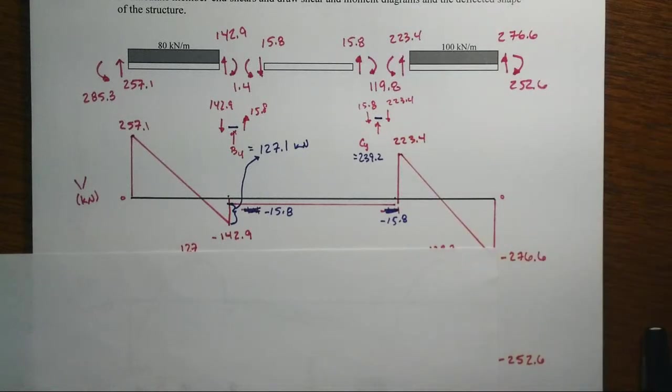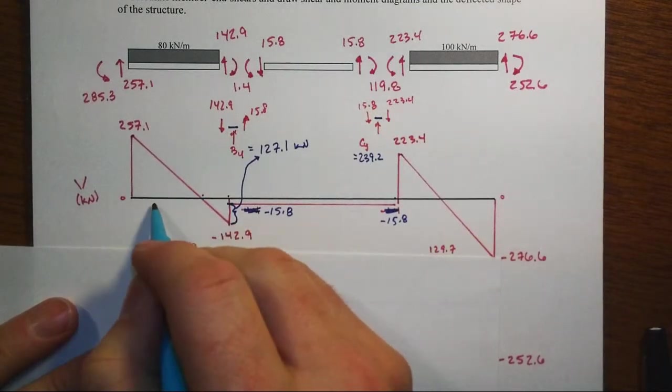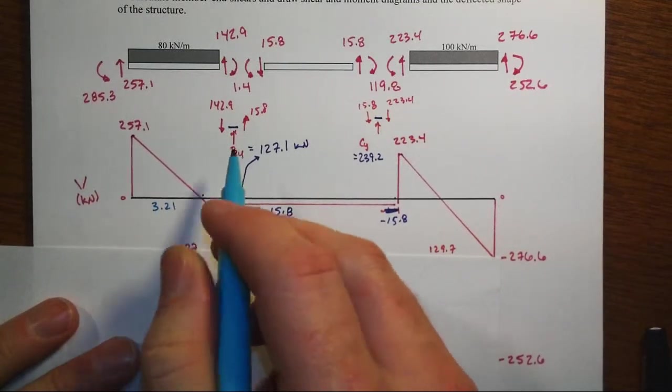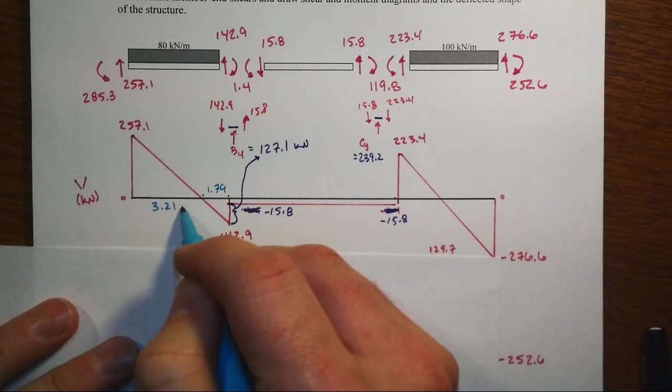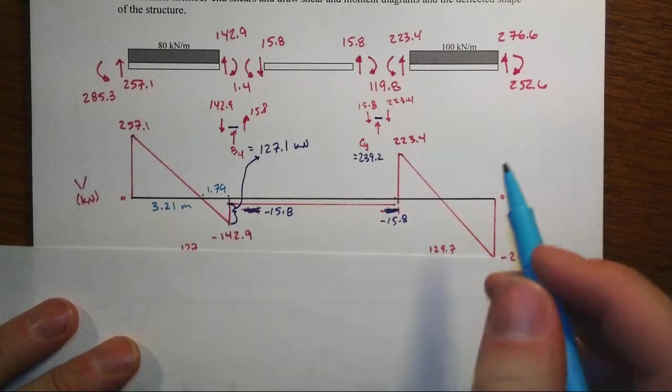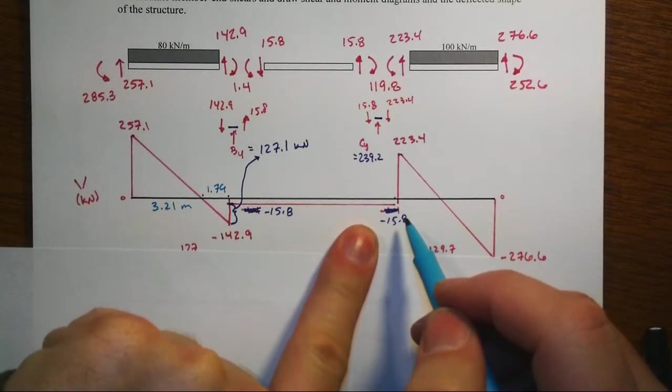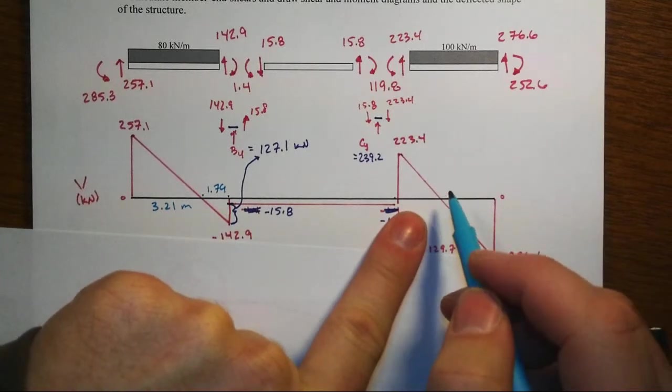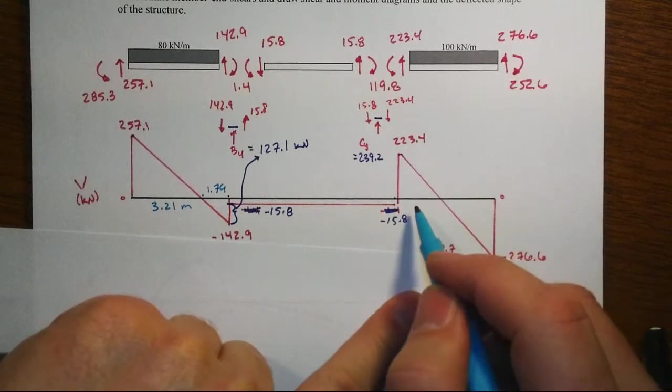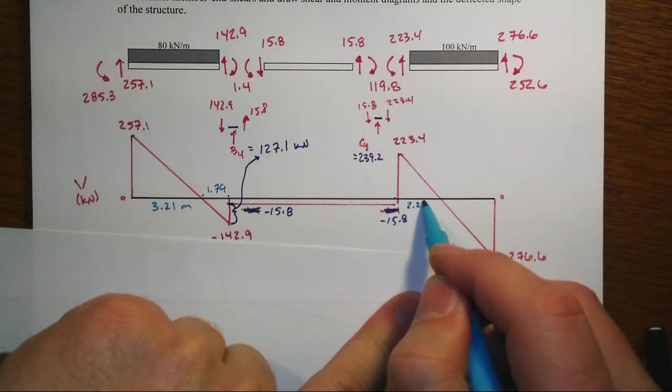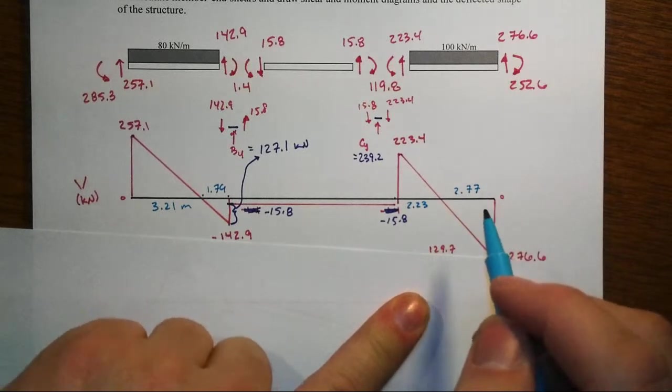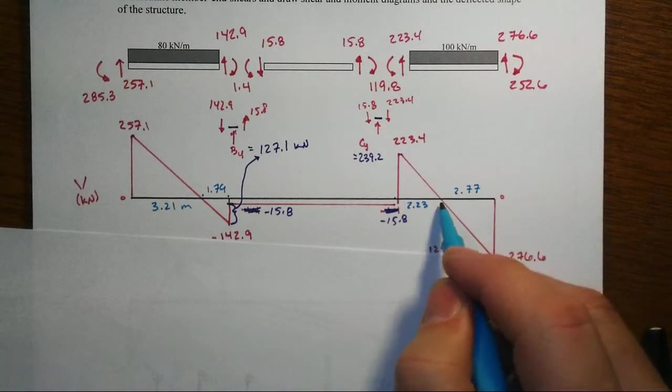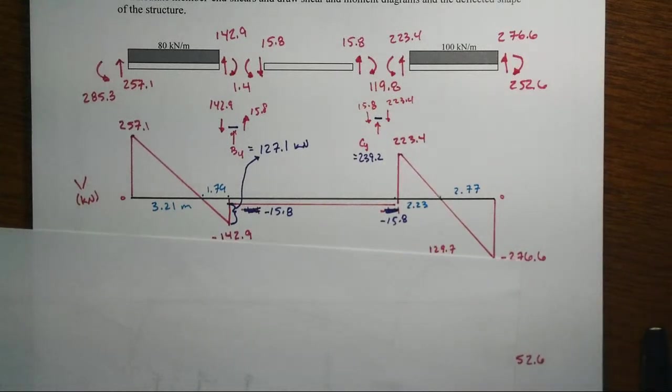When we do that moment diagram, we're going to need to know where these various points are at for the zero shear. That one's 3.21 meters, and that means the other one is 1.79 meters. How did I find that? Just proportional triangles. We have no inflection point over in the middle segment, and then out here this will be 2.23 meters and this will be 2.77 meters to that particular location.